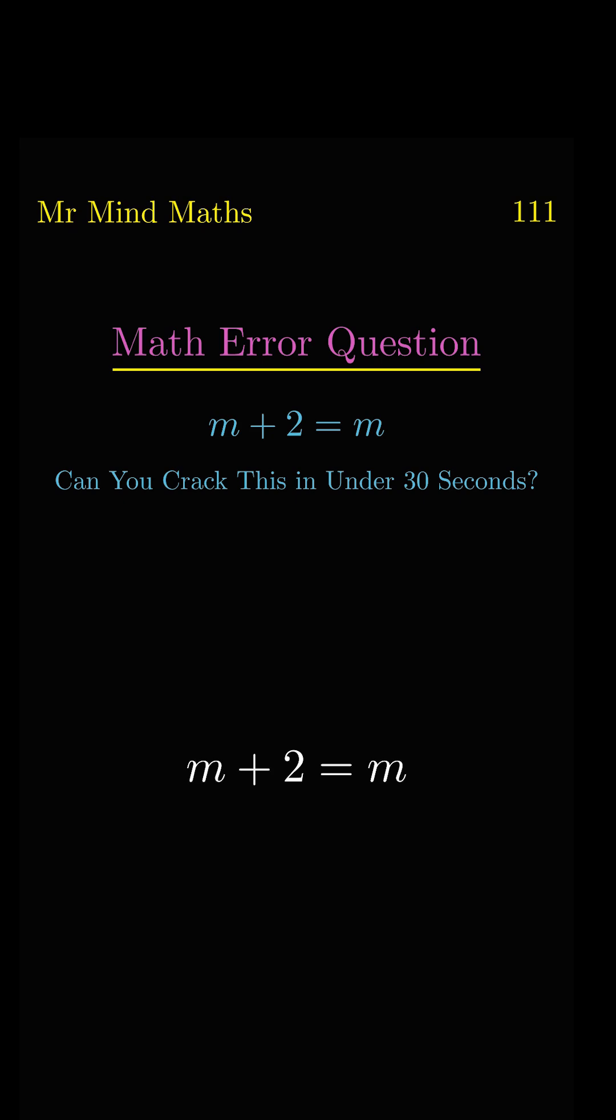First, we're taking the whole square on both sides. On the left-hand side, we will open the A plus B whole square formula. We will simplify it, then shift m to the right side. M squared and minus m squared will get cancelled.